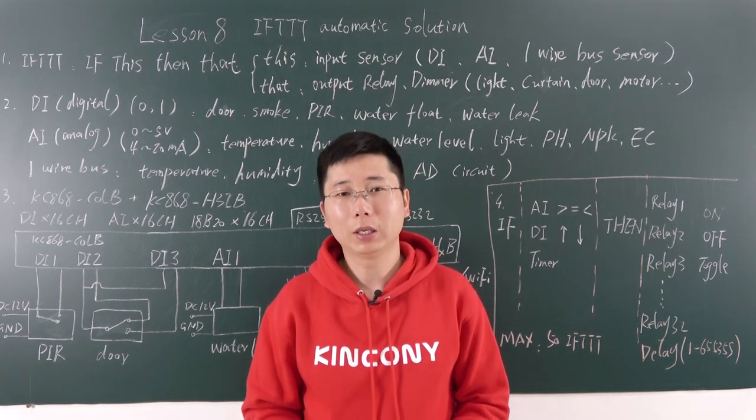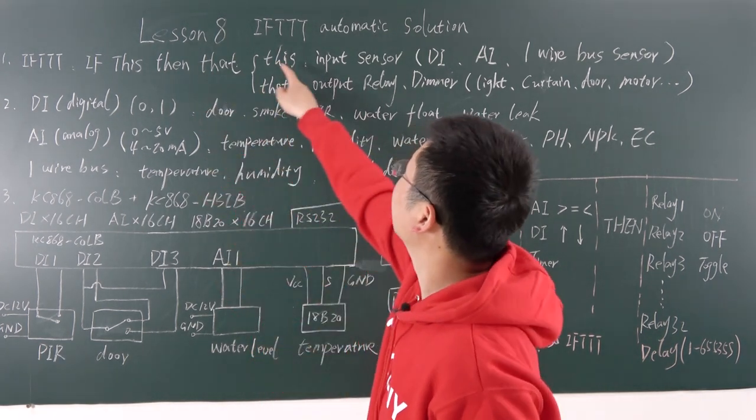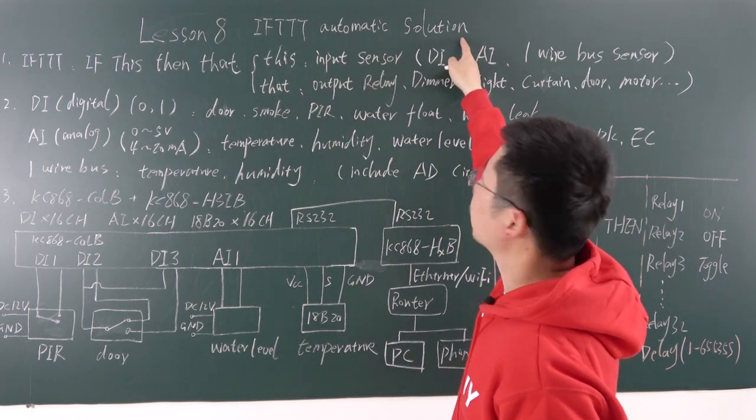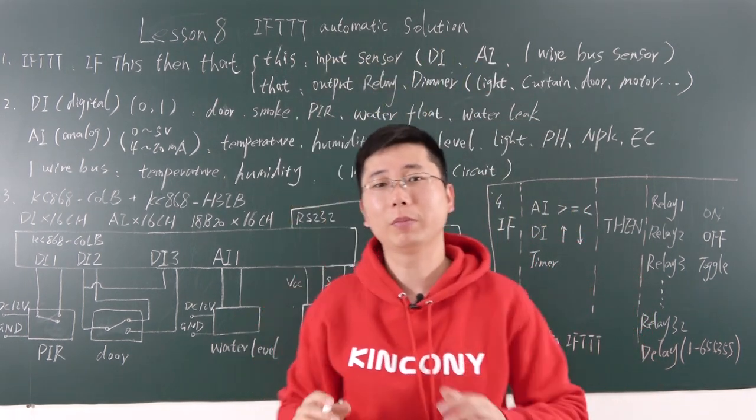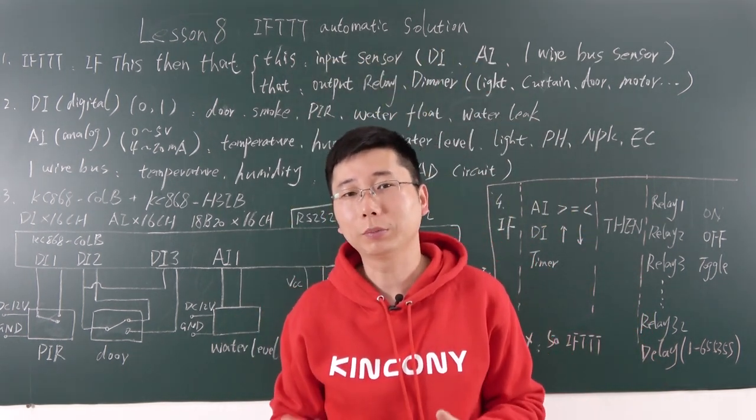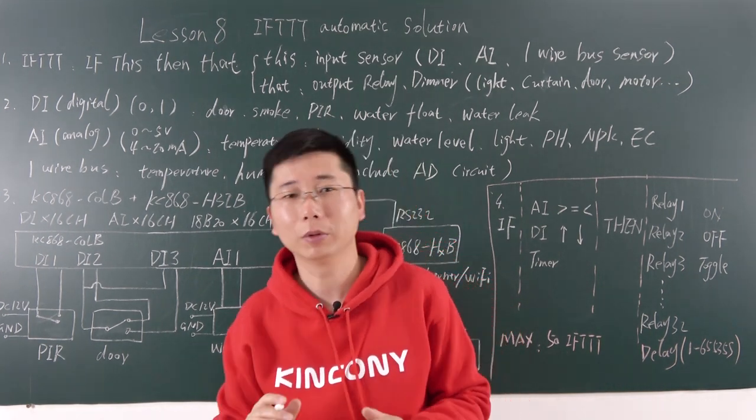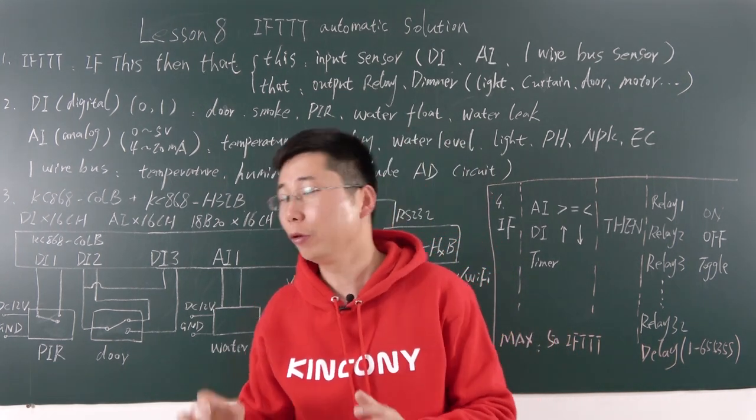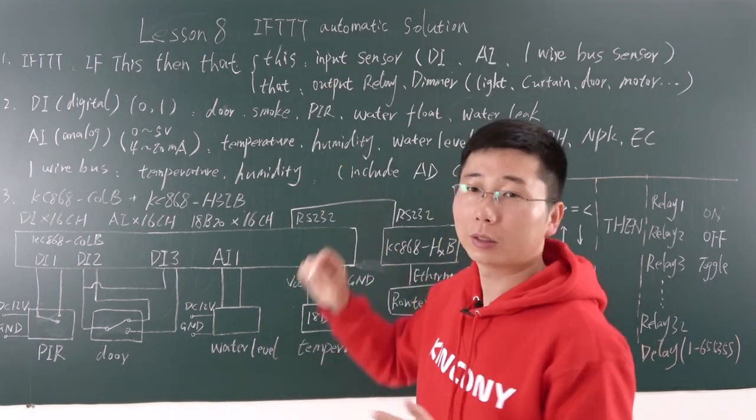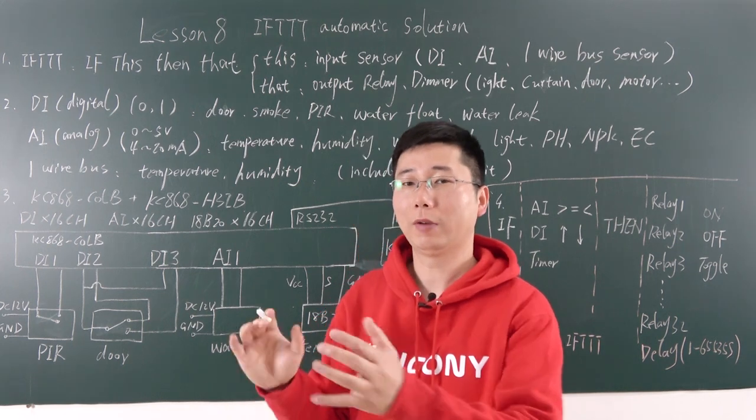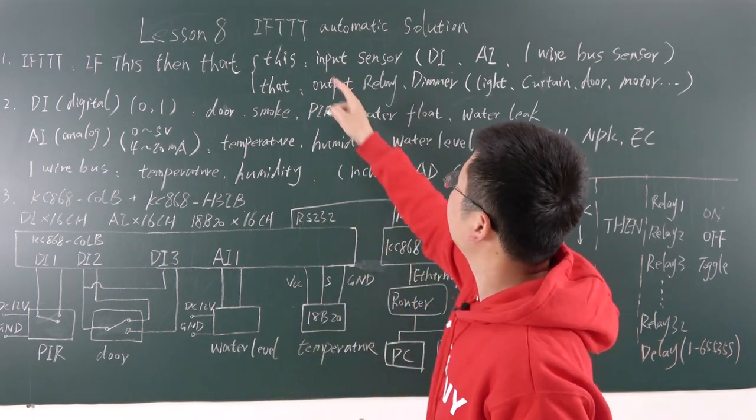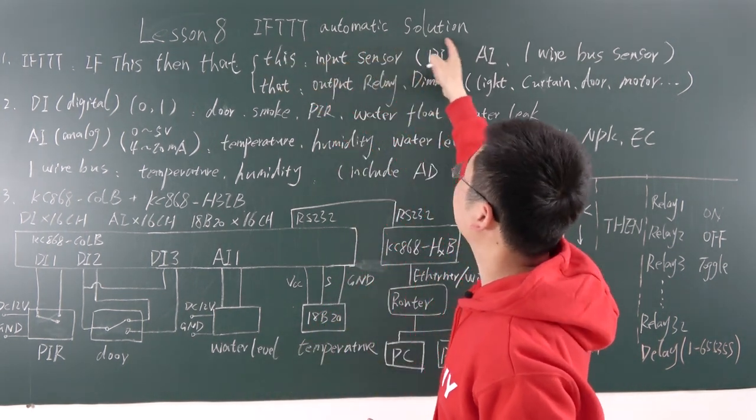Hello everyone, this is King Kong IoT Lessons. This is Lesson 8 IFTTT Automatical Solution. Before we have made many video tutorials for the relay output, you can control many devices like lights, curtains, motors, or many devices. In this video, we will begin to learn how to let your output device become smart.